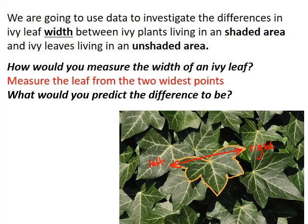Before doing the t-test, we can predict the expected results using photosynthesis theory. Leaves in the light will make more ATP and more reduced NADP from the light-dependent stages of photosynthesis. More of those products means the Calvin cycle progresses faster in the stroma, producing more glucose. More glucose means more aerobic respiration and more ATP, which is needed for cell division and leaf growth. We predict the leaves from plants in the light will be wider due to the higher rate of photosynthesis compared to those in the shaded area.